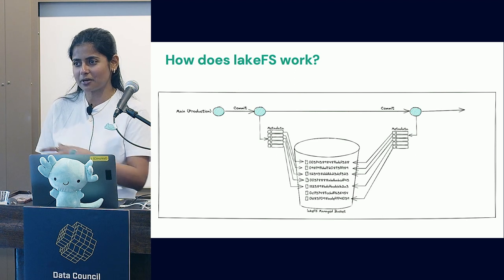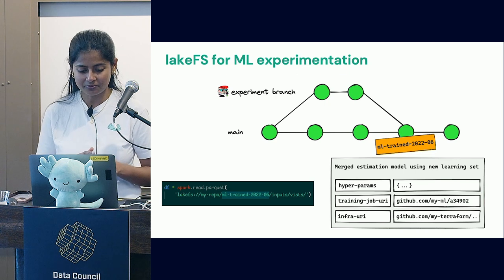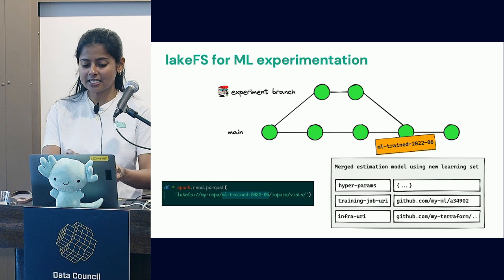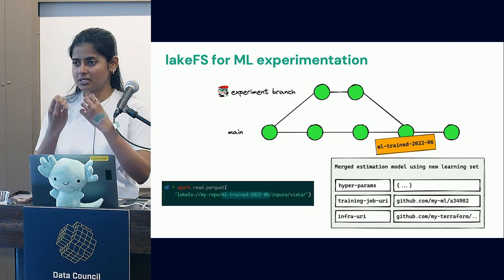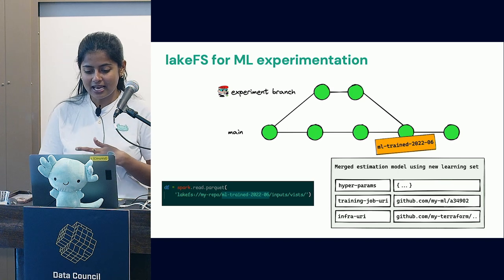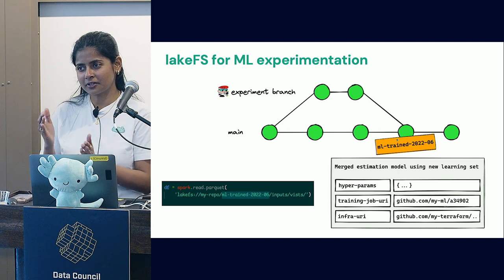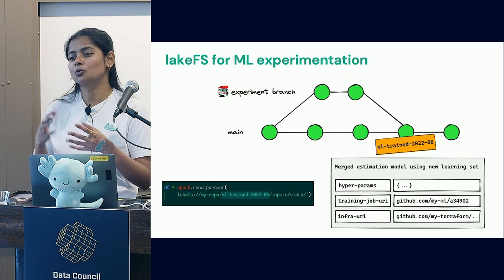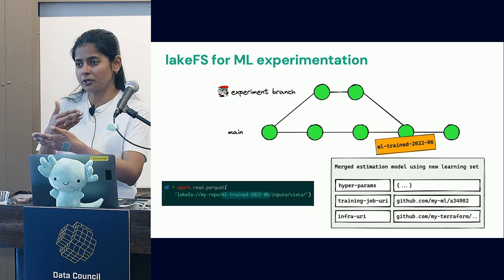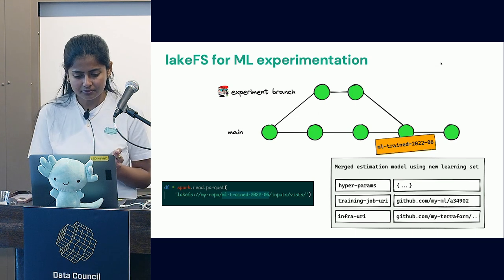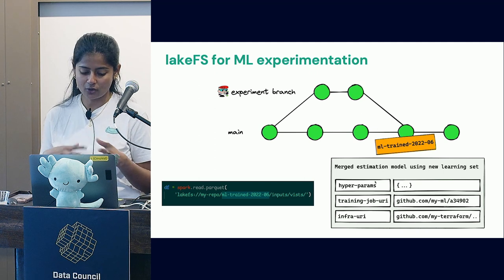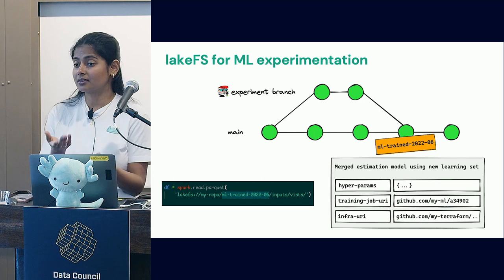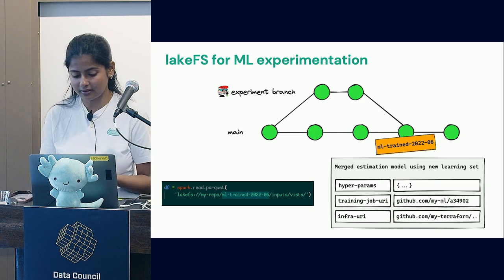Let's see how LakeFS handles the experimentation side of things. You can have all your training data live in your main branch. In the experiment branch, you simply branch out and start running your ML experiment. You can have tags at different points of the experiment to record when it was trained or add any other metadata to be able to reproduce it or reference it later. You may even want to add model artifacts because they can be read later.